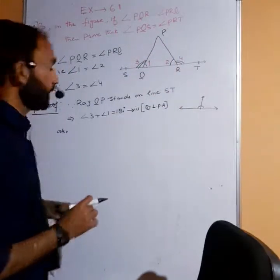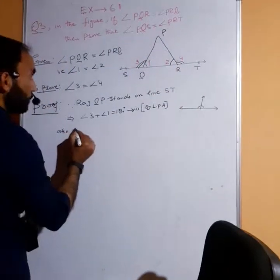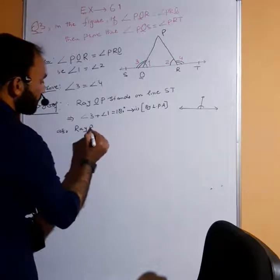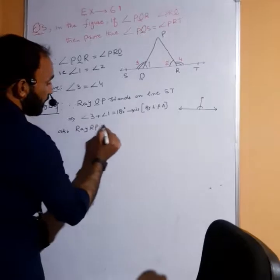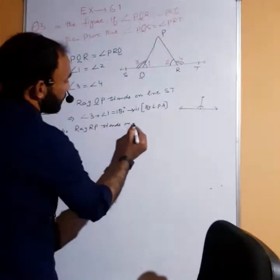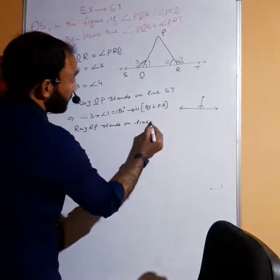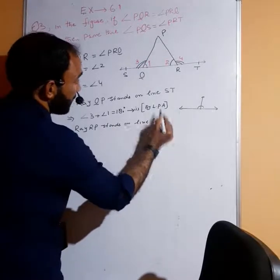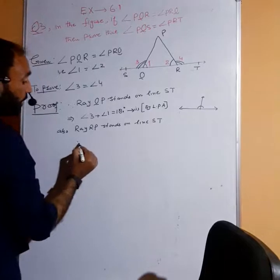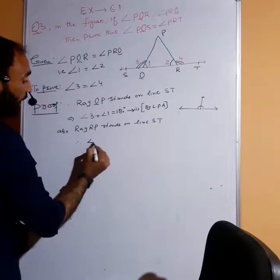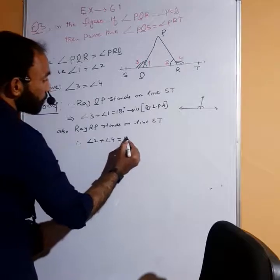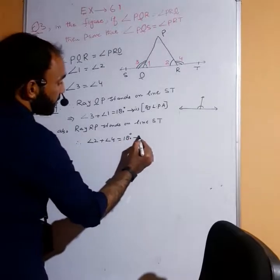So, ray RP stands on line ST. Therefore, angle 2 plus angle 4 equals 180.